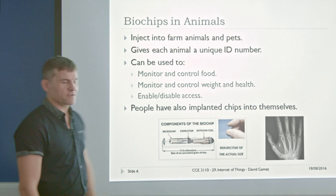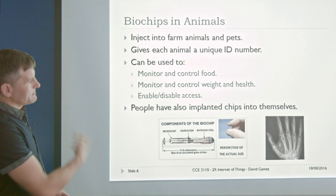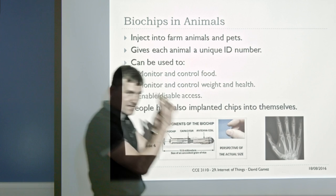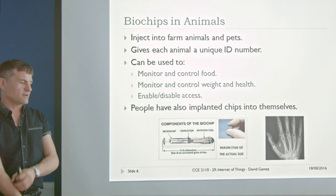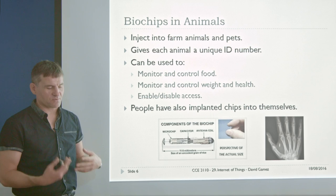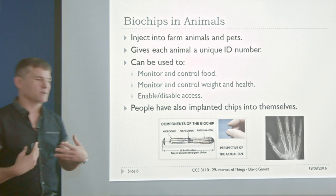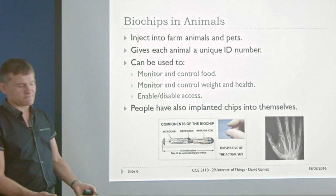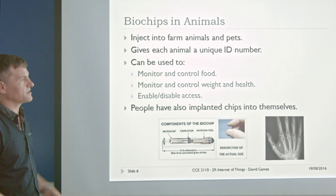For example, we've got biochips in animals, so you can turn yourself into an internet-enabled thing by implanting a chip. Biohackers have put chips inside their hands, and Kevin Warwick at Reading is one of the pioneers — he had a chip in his arm and used it to open doors. More seriously, it's used in animals: you might track the weight of particular animals, give different animals different feeds, control their access to different parts, almost automating an entire cattle farm.